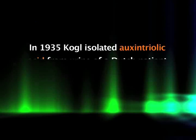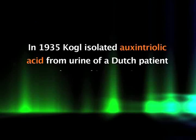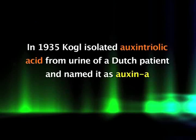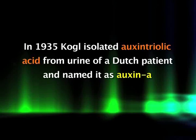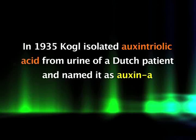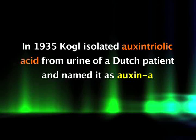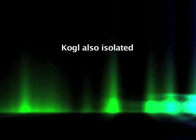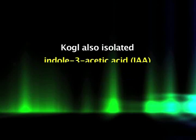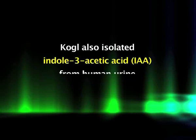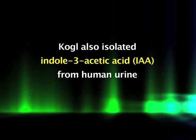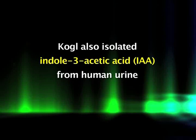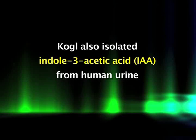In 1935, Kögl isolated auxin-triiolic acid from the urine of a Dutch patient and named it auxin A. Subsequently, he also isolated indole-3-acetic acid (IAA), the principal auxin in plants, from human urine.